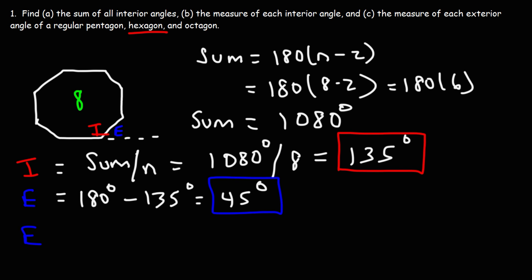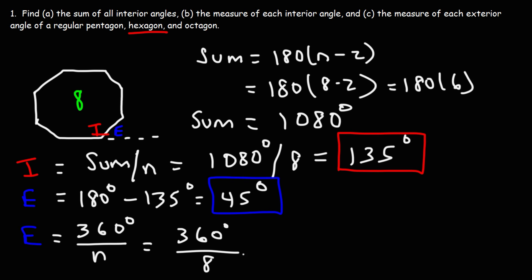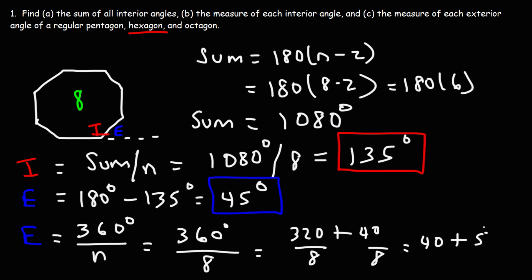To confirm, the exterior angle is also 360 over n. Taking 360 degrees divided by 8 sides: breaking it up into 320 and 40, then dividing each by 8 — 320 divided by 8 is 40, and 40 divided by 8 is 5 — gives us the same answer of 45 degrees.